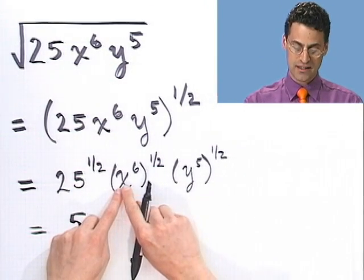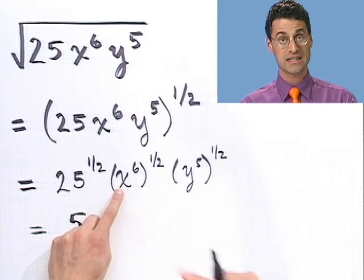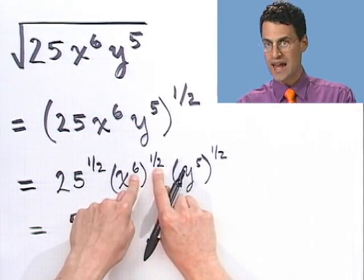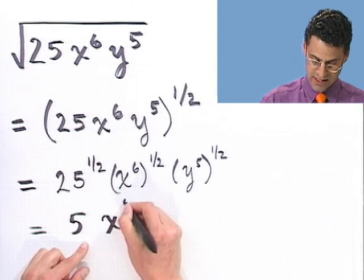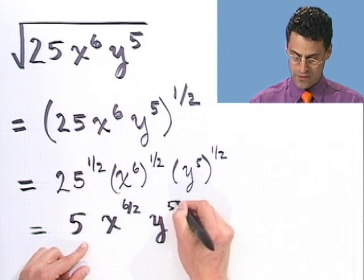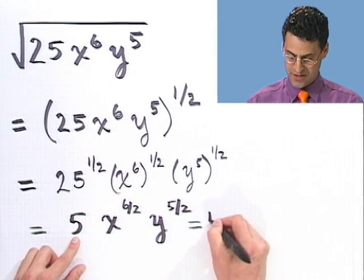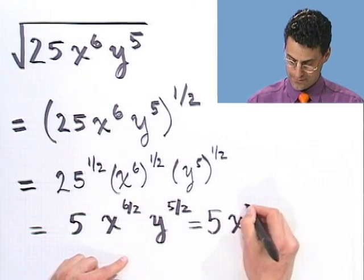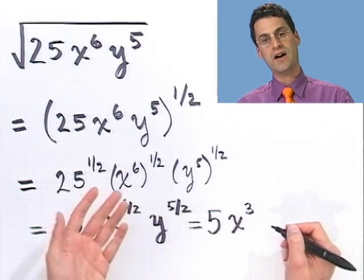If you're not sure, take a cubed and square it — you'll get a to the sixth. So here I take 6 and multiply by 1/2, giving x to the 6/2, and y to the 5/2. Simplifying further, that's 5 times x cubed, and then y to the 5/2.